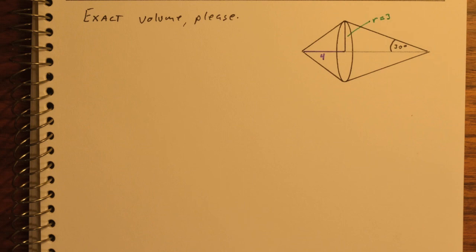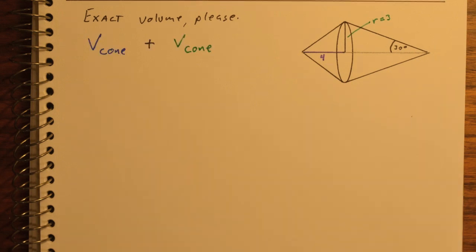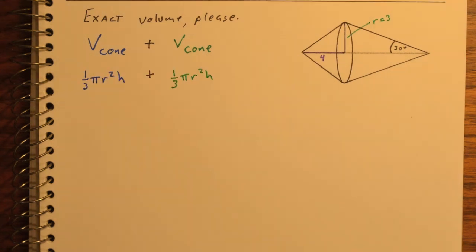All right, last example. We want the exact volume of this thing. What is this thing? Well, this thing is a cone and another cone stuck together. They have the same circular base, but that circular base is kind of smooshed together. So we've got cone plus other cone. I'll use blue to represent the cone on the left, and green for the cone on the right. I know I've got 1/3 pi r squared h plus 1/3 pi r squared h. The radius in both cones is the same, it's 3. But the heights are different. So I'll have blue height, green height.